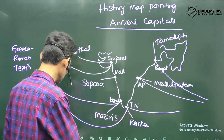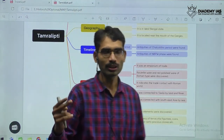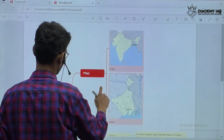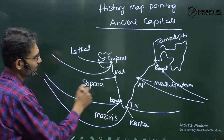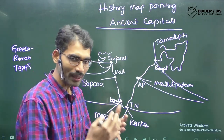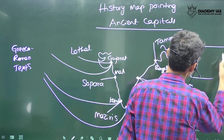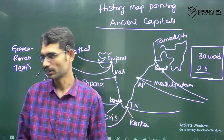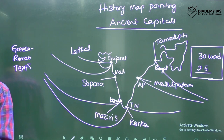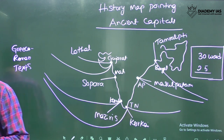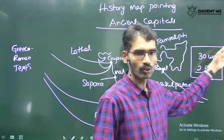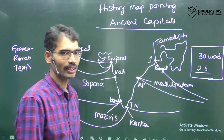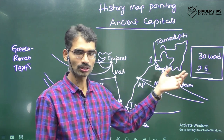Now I will give you two important examples of how to deal with the content. For example, Tamralipti — here we have only 30 words space, 30 words and 2.5 marks. UPSC may say 'Ancient Port,' 'Mauryan Port,' or 'Gupta's Port,' or 'Sangam Port' — whatever the name they give.